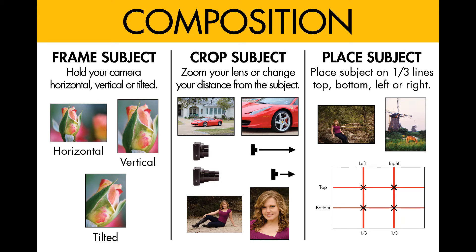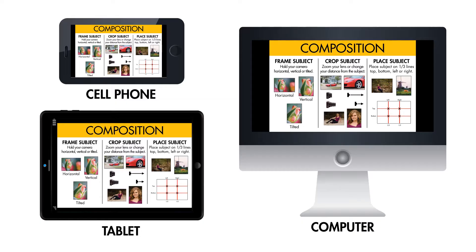Framing your subject horizontal, vertical or tilted, zooming back to show a lot of area or zooming in to crop in on your subject, and placing your subject on the one-third lines will make a big difference in your photograph. This is just one of the cards in the CALL Creative Choices Quick Reference Cards. You can download the whole set of cards as an app or PDF to your cell phone, tablet or computer.